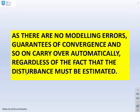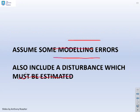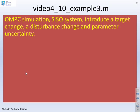As there are no modelling errors, guarantees of convergence carry over automatically regardless of the fact that the disturbance must be estimated. What we're going to do next is assume some modelling errors — assume that the parameters within the process state-space matrices A, B, C are going to be different. We're also going to include a disturbance which must be estimated. We'll start with example three.